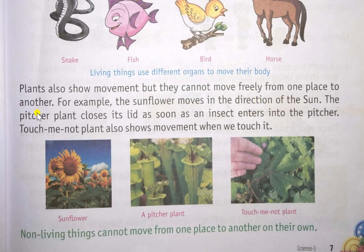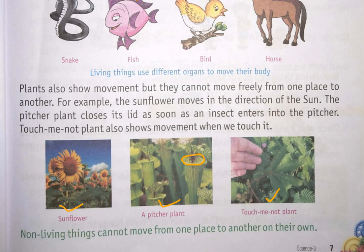Plants show movement but cannot move freely like human beings or animals because they don't have legs. For example, the sunflower moves in the direction of the sun. The pitcher plant closes its leaf as soon as an insect enters. The touch-me-not plant shows movement when we touch it. Non-living things cannot move from one place to another on their own.